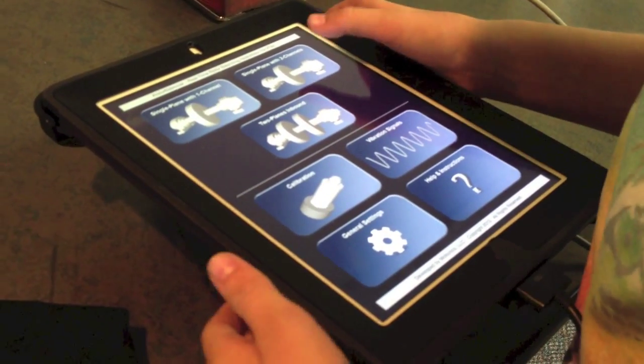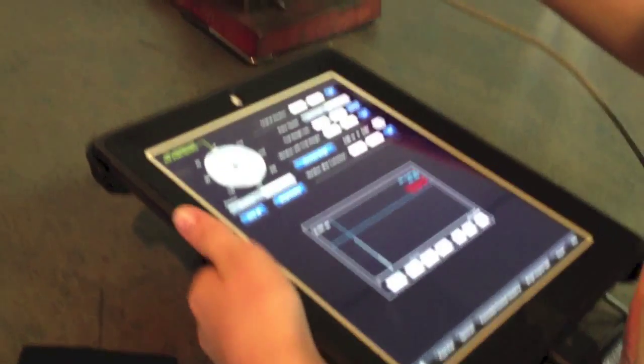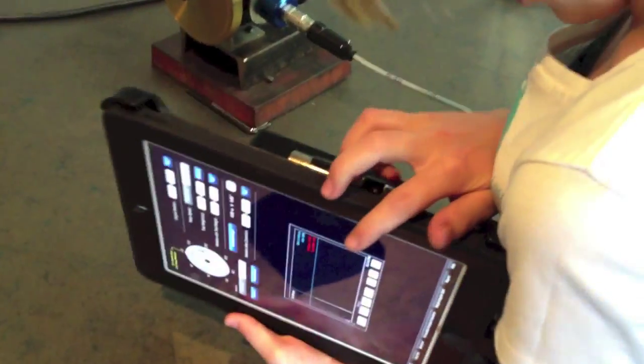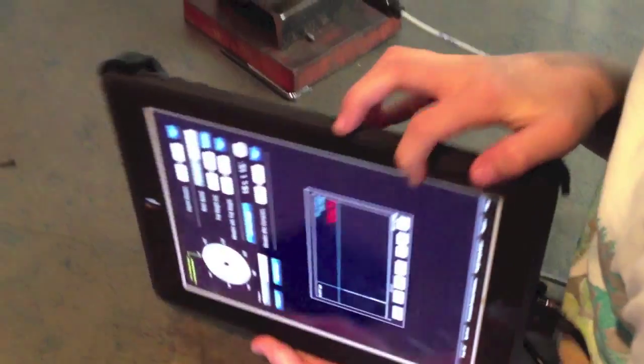I would go to single plane with two channels because my accelerometer would be my first channel and my tachometer, which is also the laser, would be the second channel.